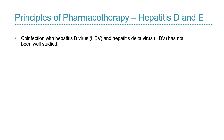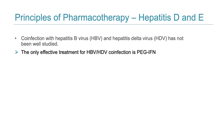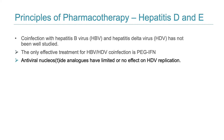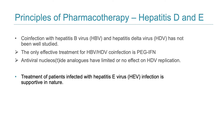The co-infection of hepatitis D virus with hepatitis B virus has not been well studied. The only effective treatment for HBV-HDV co-infection is PEG interferon. Antiviral nucleoside or nucleotide analogues have limited or no effect on HDV replication. Treatment for patients infected with hepatitis E virus is supportive in nature.